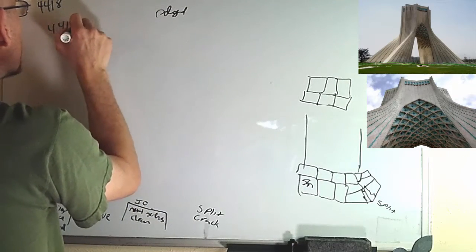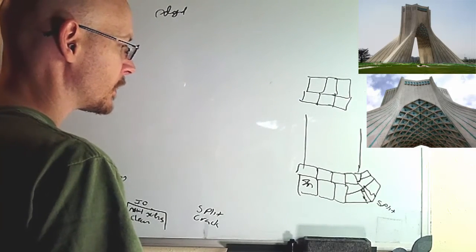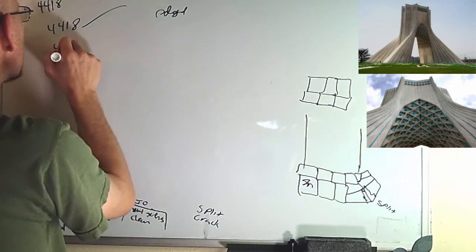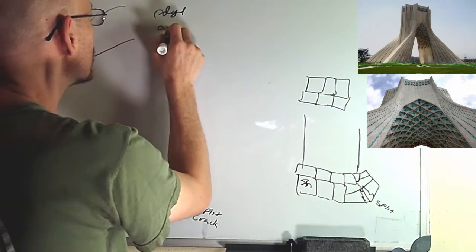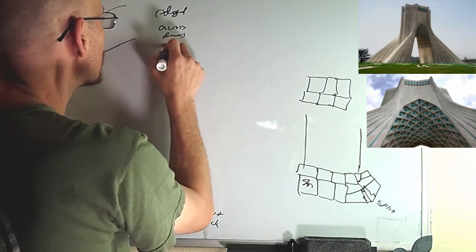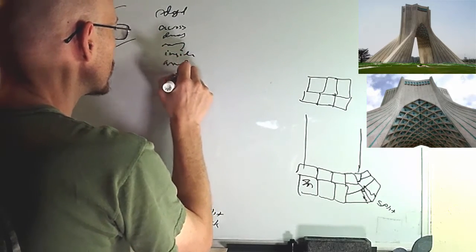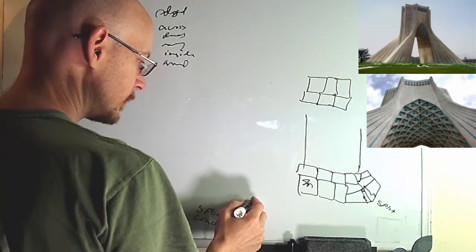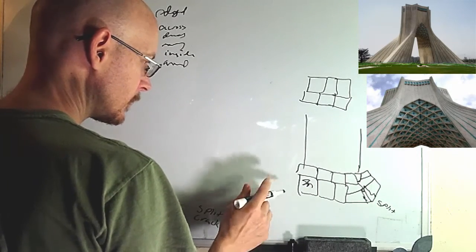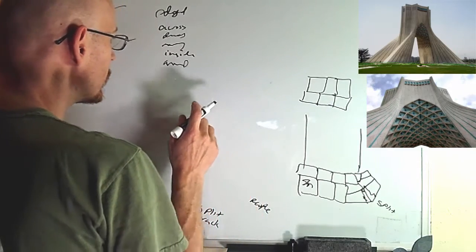4418. Getting the number 9 again — that could be a random thought. But the number 9 — could be random, could be 1 plus 8. 4418. Across, dense, moving. Inside, around. People. Flat.